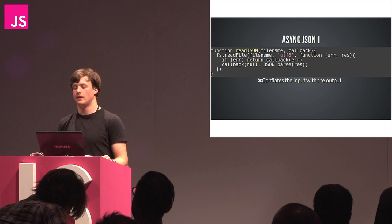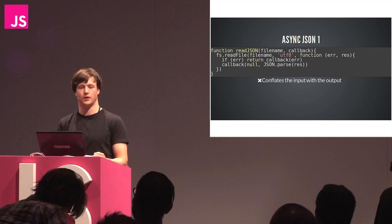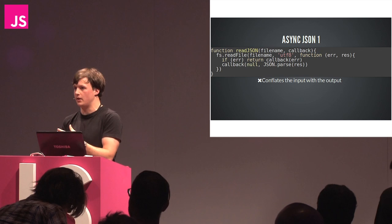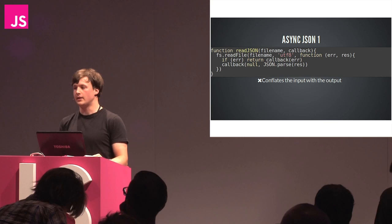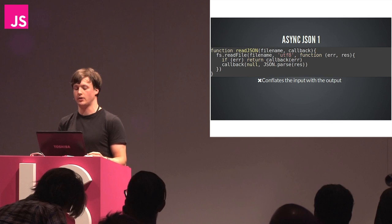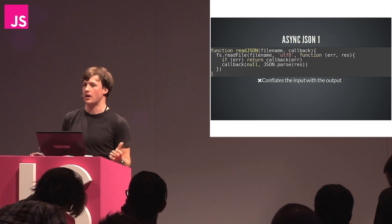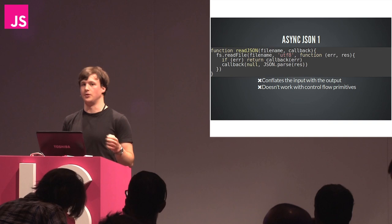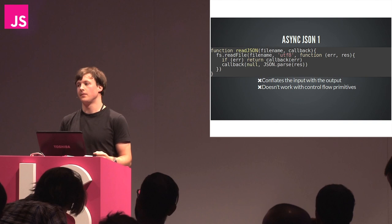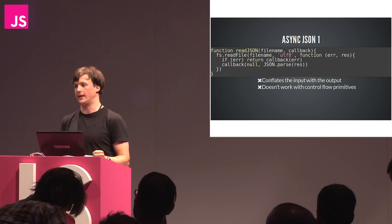We're going from our simple model of having arguments as inputs and a return value as the result, to now having this additional argument that represents how to send the result back. That callback isn't really an input to the function - it's just part of the mechanics. It relies on pure convention that we pass the error as the first argument and the result as the second, and that we don't do weird things like call the callback multiple times. It also won't work with control flow primitives - it's really difficult to do an asynchronous operation in the middle of a for loop using this technique.